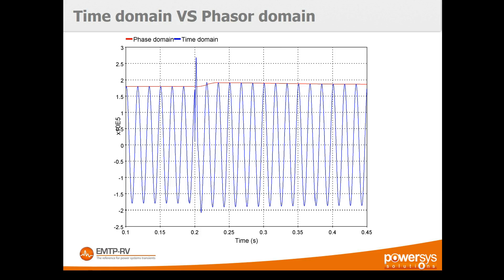In practice, the key difference between phasor domain and time domain software is what you see in the results. In phasor domain software you have access to the magnitude and angle of the phasor, whereas in time domain software you see the actual waveform of the voltage, current, and all electrical quantities — the exact same waveforms as those on a real network.